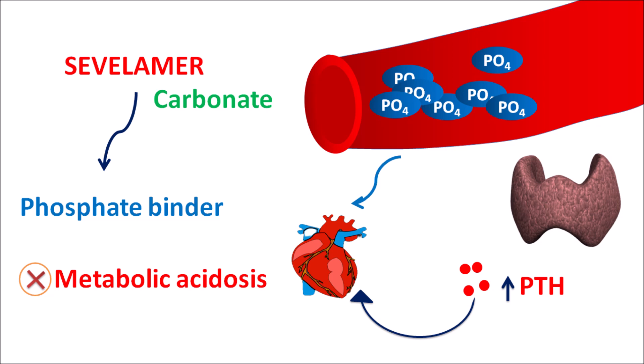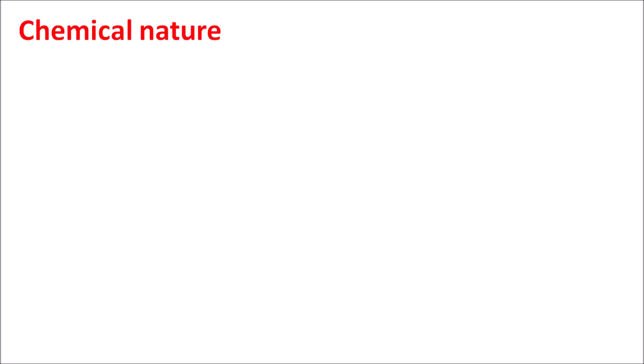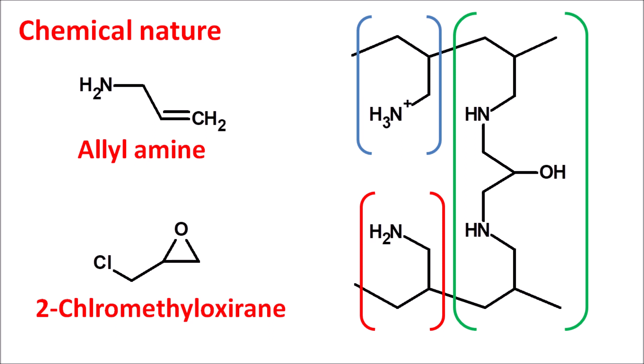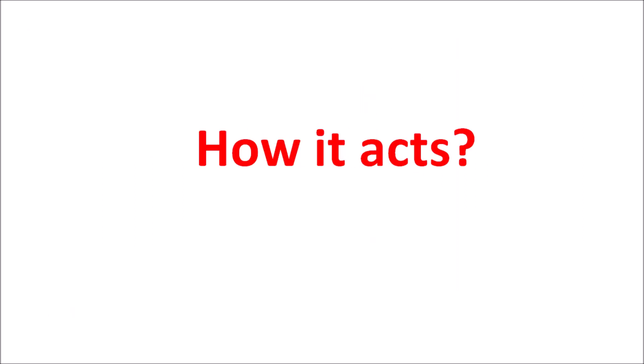Sevelamer carbonate is particularly indicated in patients with end-stage renal disease as a phosphate binder to reduce phosphate absorption. Regarding its chemical nature, sevelamer is made up of two components: allylamine and 2-chloromethyl oxirane. When combined, they form a polymerized resin structure in which amine groups are visible. The amine is converted to a quaternary ammonium group, forming a salt with bicarbonate.